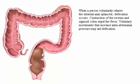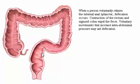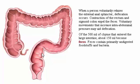When a person voluntarily relaxes the external anal sphincter, defecation occurs. Contraction of the rectum and sigmoid colon expels the feces. Voluntary movements that increase intra-abdominal pressure may aid defecation. Of the 500 milliliters of chyme that entered the large intestine, about 150 milliliters become feces. Feces contain primarily undigested foodstuffs and bacteria.